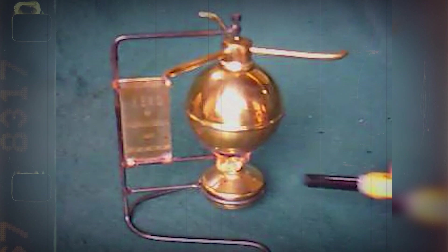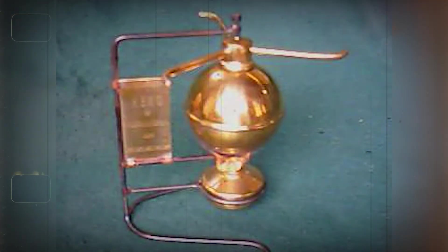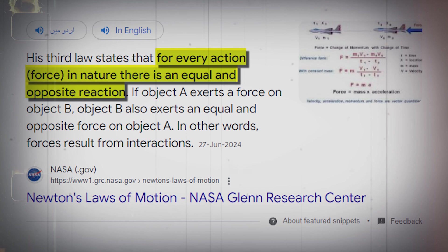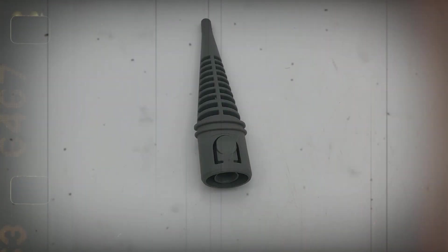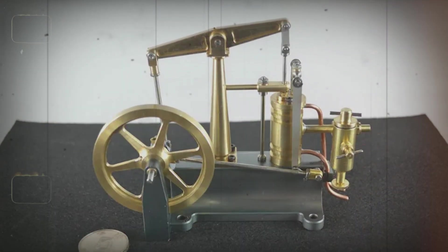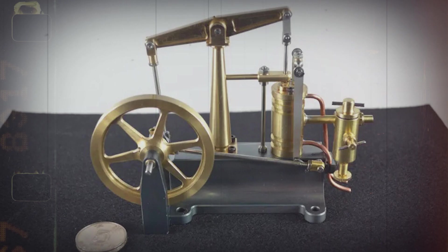The Aeolipile was based on basic principles in physics, specifically Newton's third law of motion. For every action, there is an equal and opposite reaction. When steam shot out of the nozzles, it created thrust, which made the sphere spin. This directly applied steam power for rotary motion.